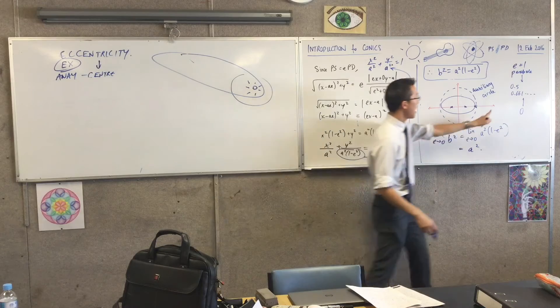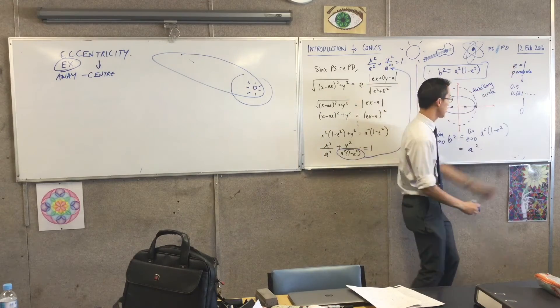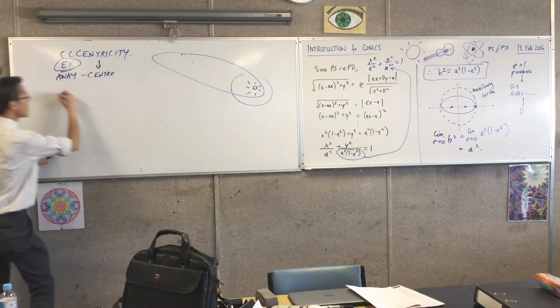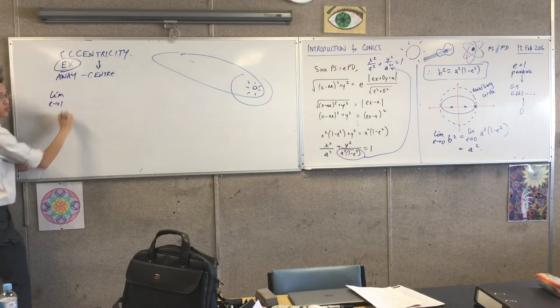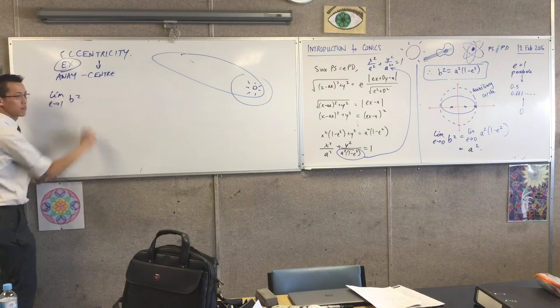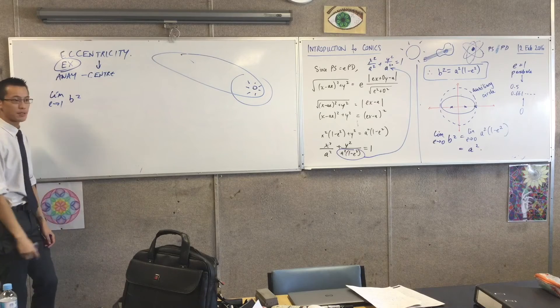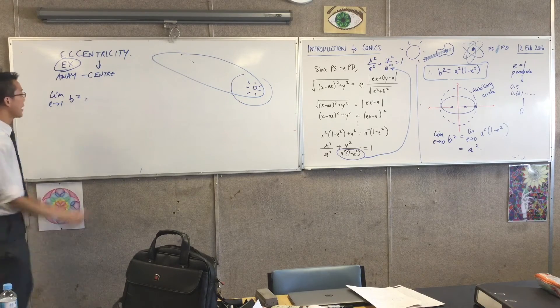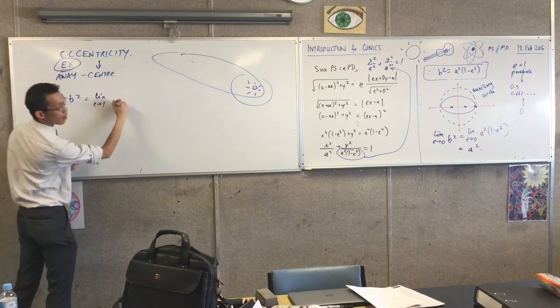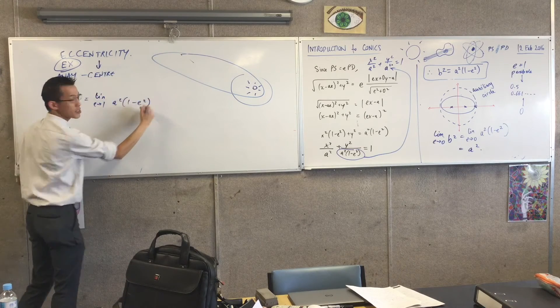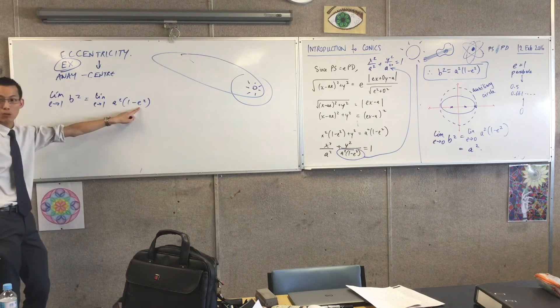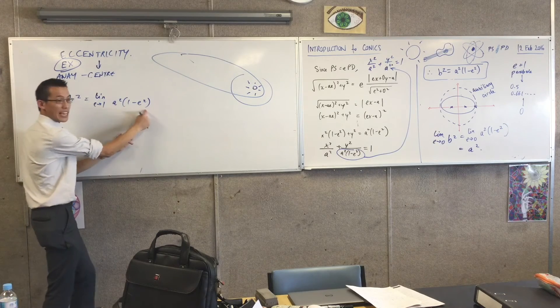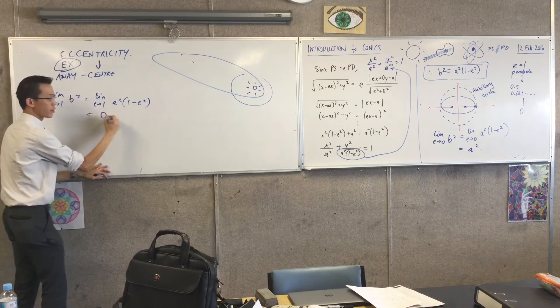Think about this. As the eccentricity increases, what happens as e approaches 1? What happens there? What's it getting? Well, you get limit as e approaches 1 of a squared, 1 take away e squared. So that thing is approaching 1. It's approaching 1 take away 1. This thing is going to 0.